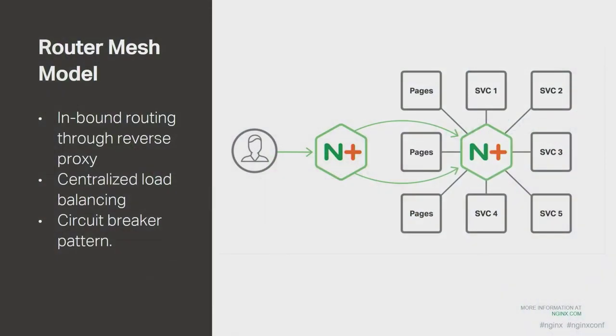The router mesh model is like the proxy model in that we have a front-end proxy server to manage incoming traffic, but it also adds centralized load balancing between the services. Each service connects to that centralized router mesh, which manages the distribution of connections between different services. The router mesh model also allows you to build in the circuit breaker pattern, adding resiliency and the ability to monitor and pull back on instances of services that are failing. Unfortunately, because it adds an extra hop, if you have to do SSL encryption it actually exacerbates the performance problem — which is where the fabric model comes into play.